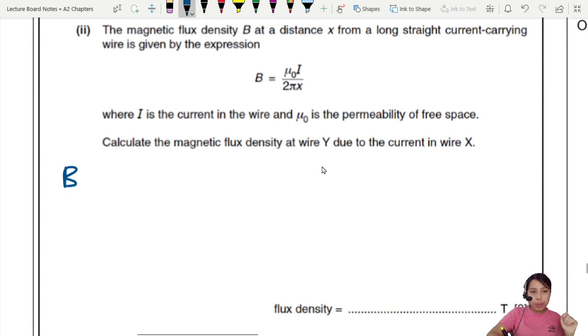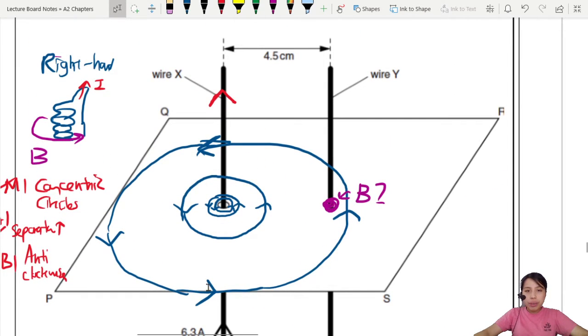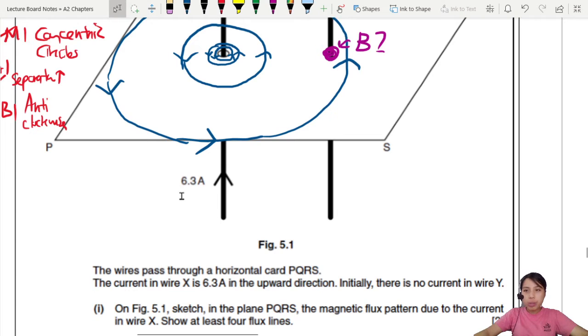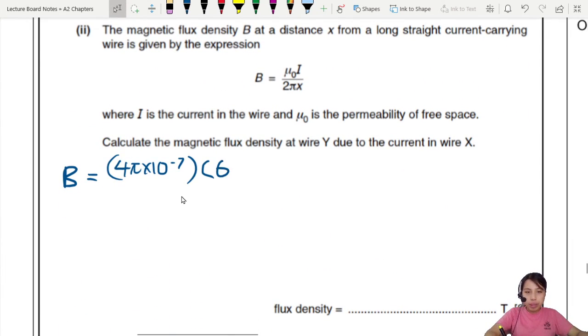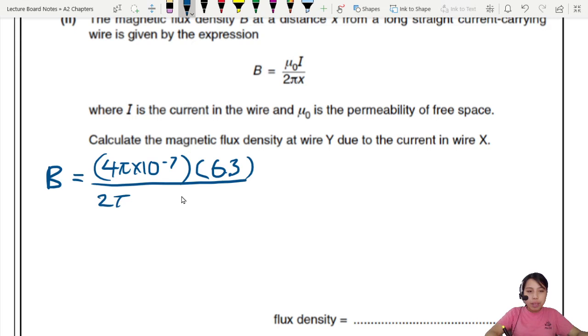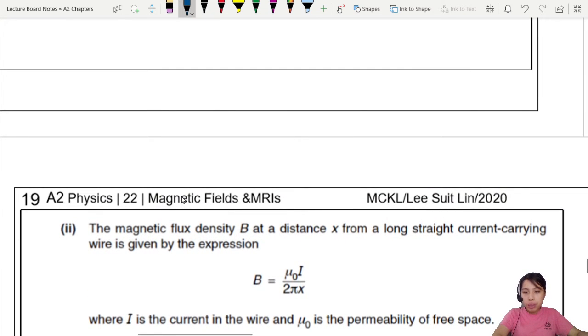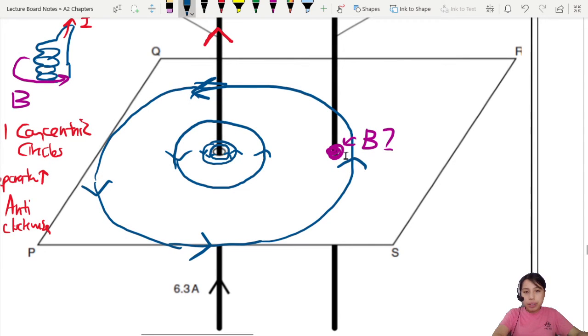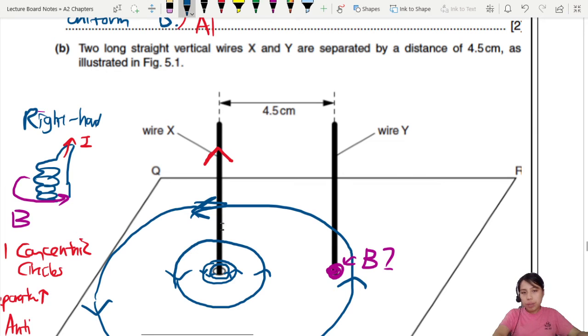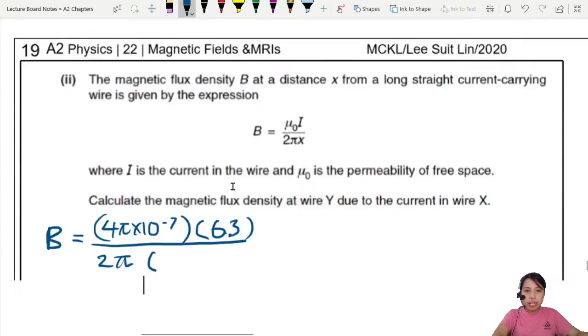So basically this spot right here. What is the B at that spot? It gives an equation for how to calculate the B. Wire X is the one creating the field. And you want to ask, what is the B at position at wire Y? You are 4.5 cm away from the source that generates the magnetic field. So we're going to use our 4.5 cm in the equation. So let's write it out.